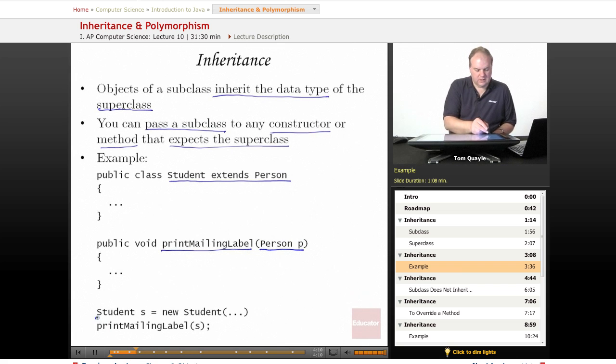I can declare a student, S, call the constructor to create a new student, and I can actually pass S to the print mailing label method. Even though print mailing label accepts a person and S is a student, student is a subclass of person. So student can actually act as a person and this is perfectly valid in Java to pass a subclass to a method that expects the superclass. That will work just fine.